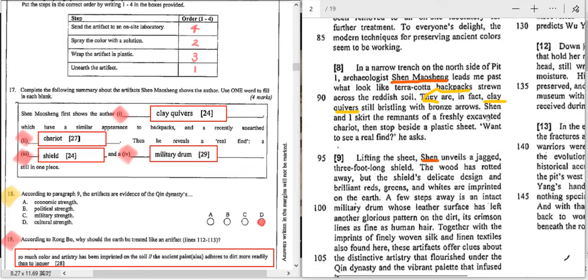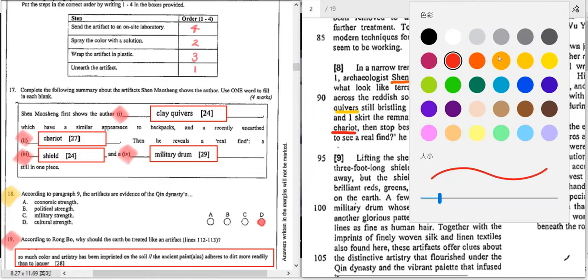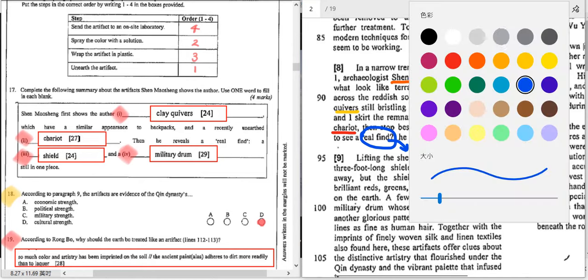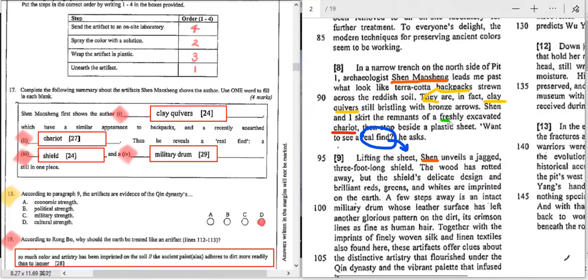Because the archaeologist first shows the author clay quivers, which have a similar appearance to backpacks. So bingo, the first one. And then he and I skirt the remnants of a freshly excavated something. Then stop beside another thing. Want to see a real find. So here is another item. A freshly unearthed chariot.